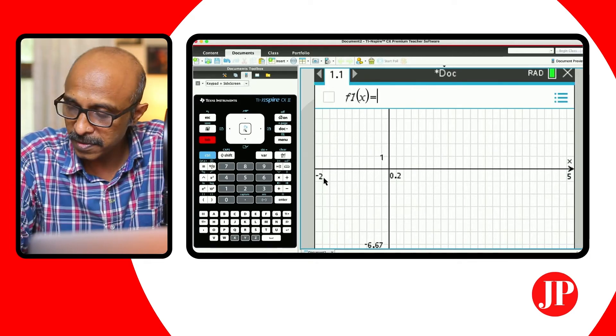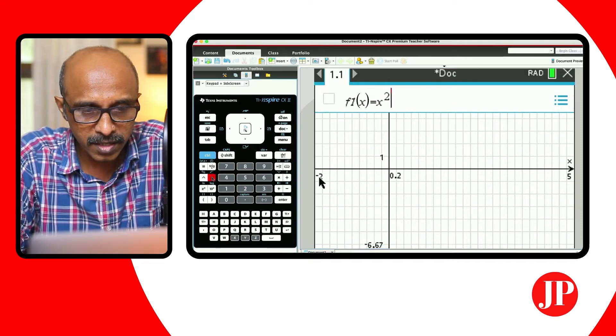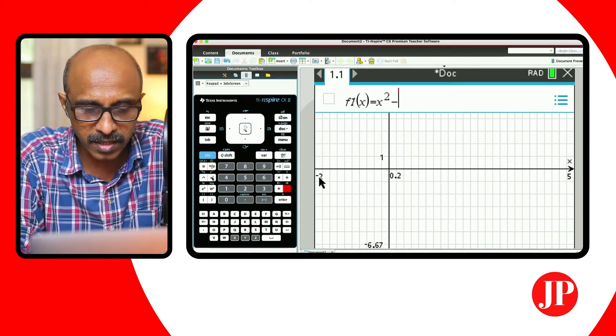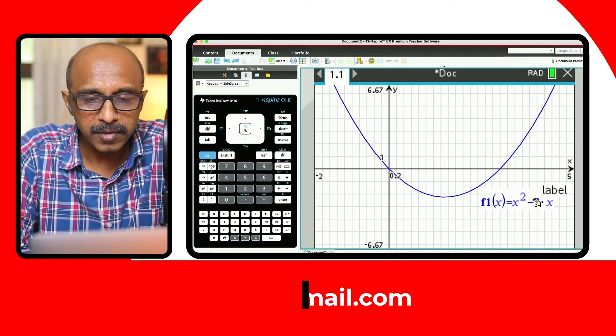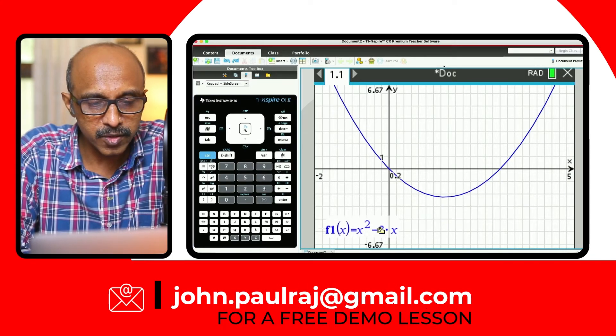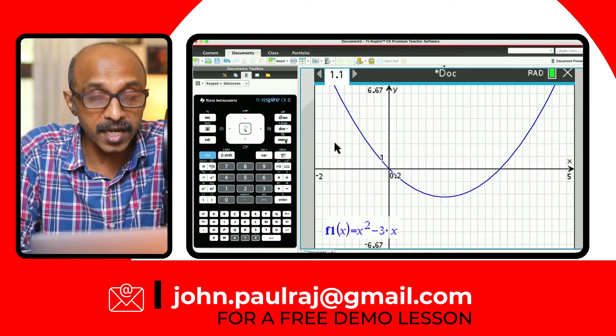So I'm going to hit tab to bring back the function entry. I'm going to enter it as required in the question x² minus 3x. Hit enter. And there we've got our graph. I'm just going to move the label to some corner here.